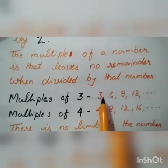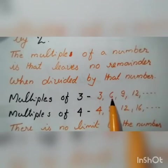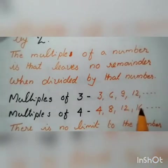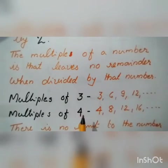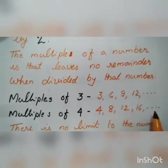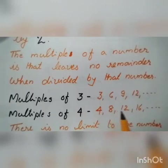Multiples of 3: 3 ones are 3, 3 twos are 6, 3 threes are 9, 3 fours are 12, 3 fives are 15, and so on. Multiples of 4: 4 ones are 4, 4 twos are 8, 4 threes are 12, 4 fours are 16, and so on — are the multiples of 4. There is no limit for the multiples.